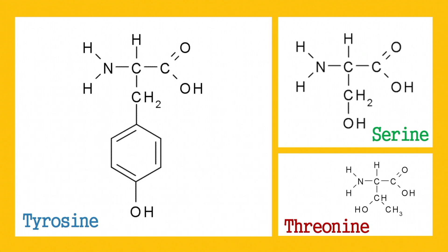Only three of the 20 amino acids contain OH groups as part of their R-groups: tyrosine, serine, and threonine. If there is no benzene ring, you can automatically eliminate tyrosine, and from that point you only need to differentiate whether it's serine or threonine.